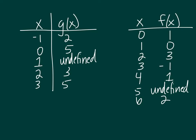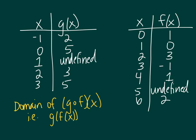Now we're going to revisit the original functions and find the domain of g of f of x. Go ahead and put this on pause and come up with the set of inputs in the domain. For this problem you're going to start with the domain of f. The domain of f contains the numbers 0, 1, 2, 3, 4, and 6 — those are the possibilities. But we may eliminate some if they don't make it all the way through the composite function. An input of 0 is mapped to an output of 1 by function f, but if we take 1 as input to g, it's undefined. So 0 will not be in the domain of the composite function.